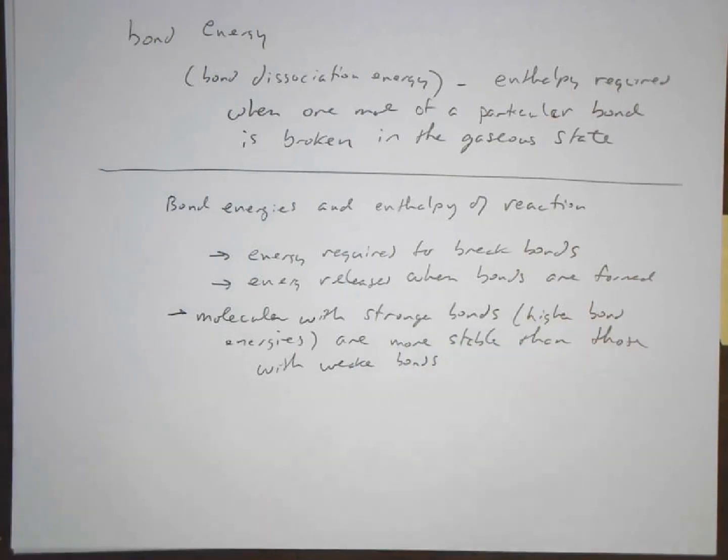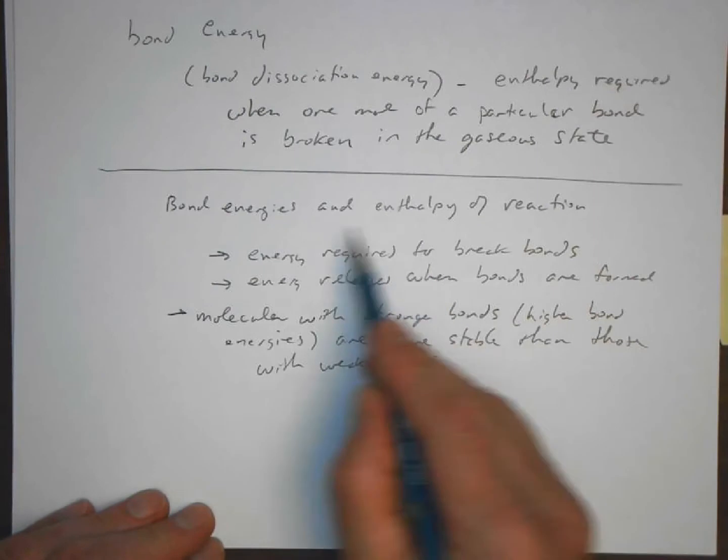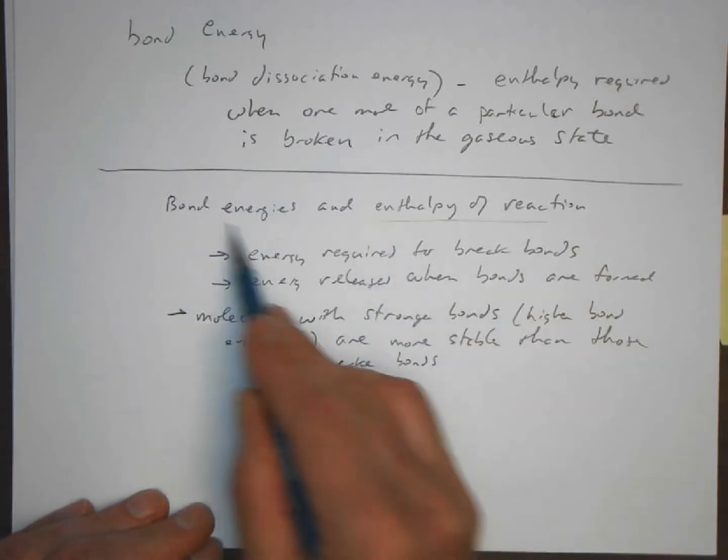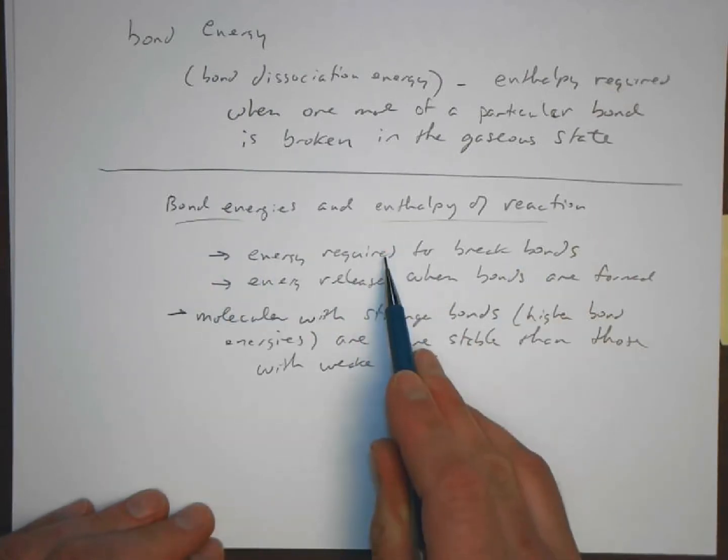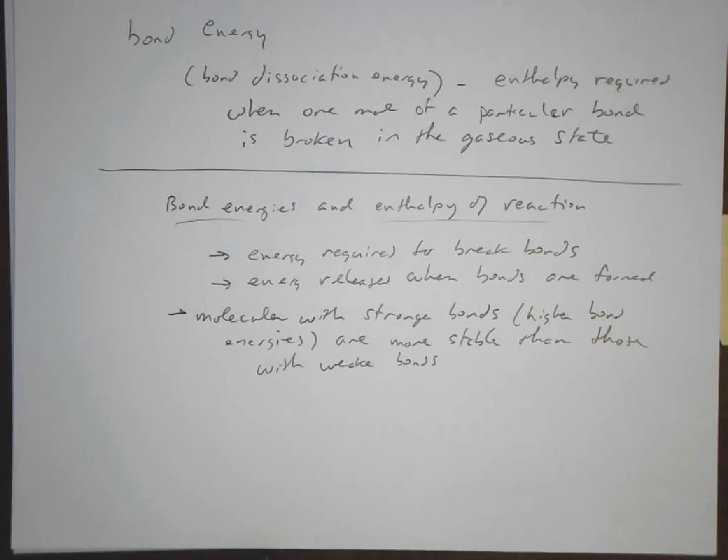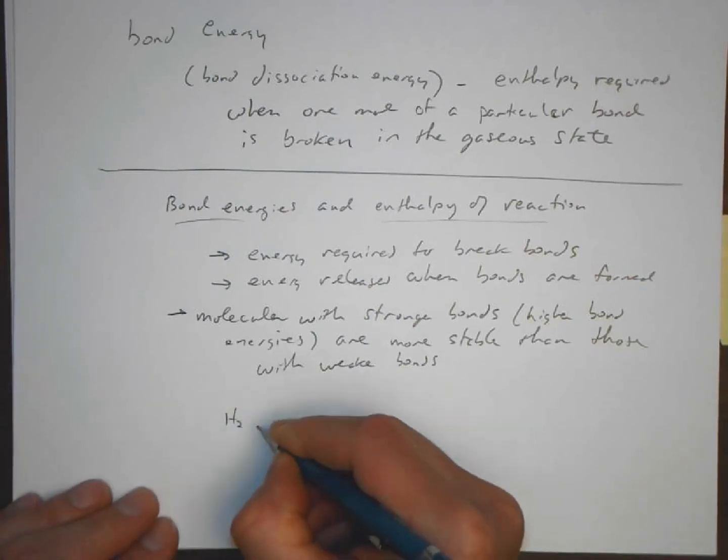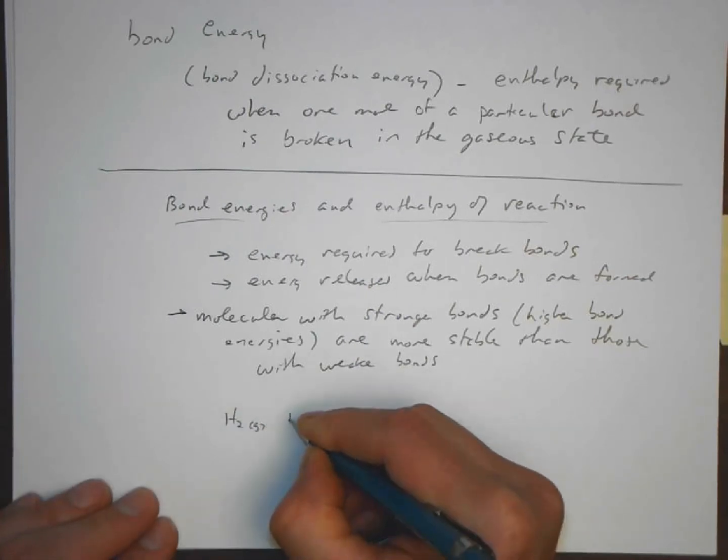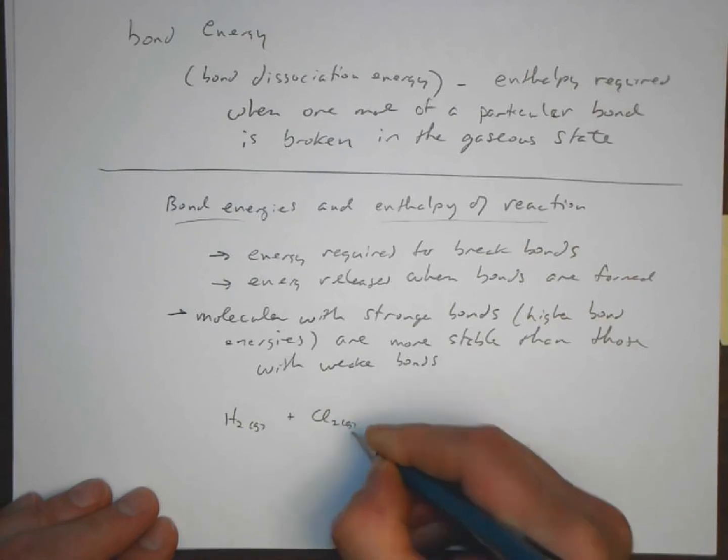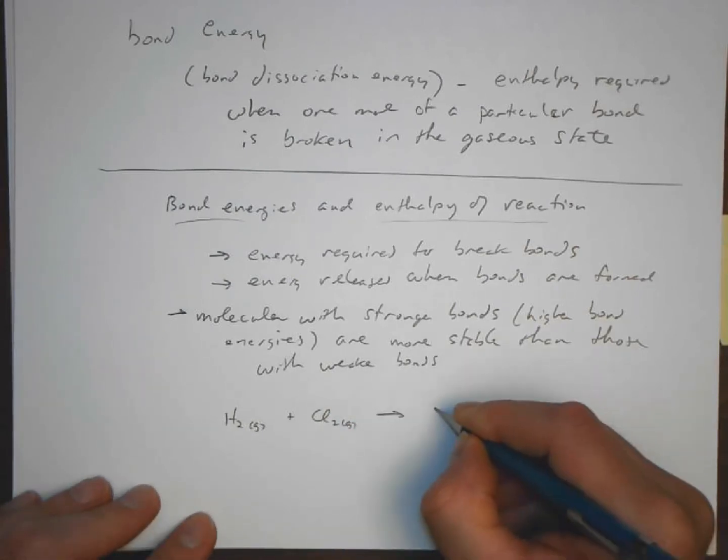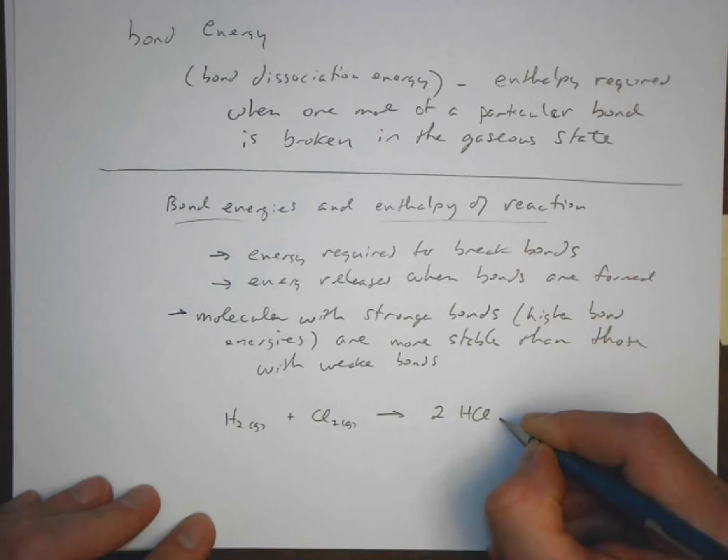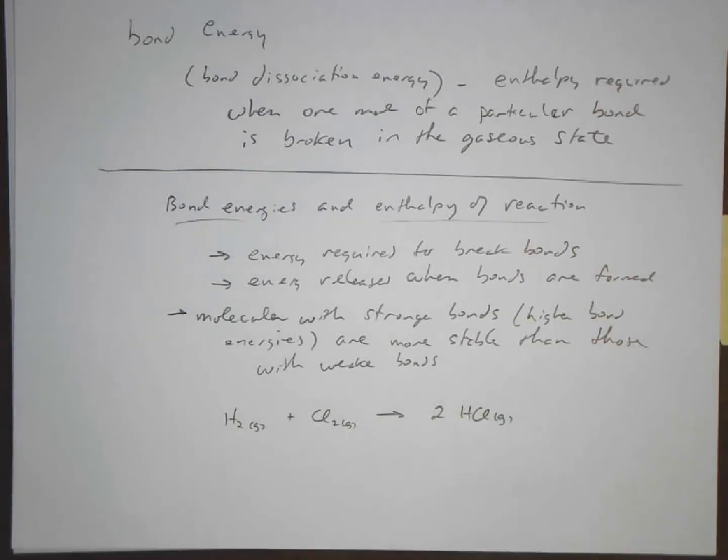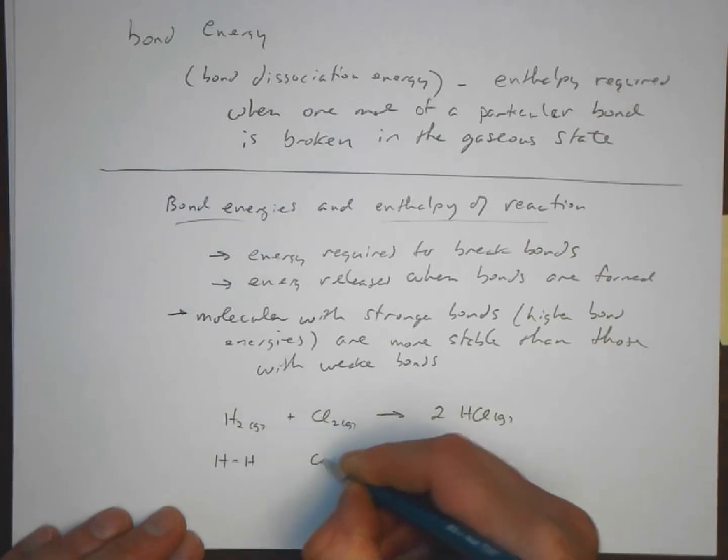So let's keep that in mind. All right, so let's do this. Let's try to estimate an enthalpy of reaction from the bond energies keeping in mind that energy is required to break bonds and energy is released when bonds are formed. So let's take a reaction like this: chlorine and hydrogen in the gas phase are making hydrogen chloride gas.